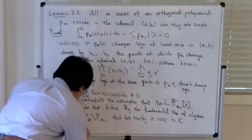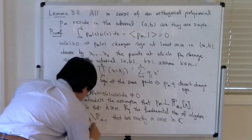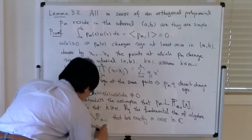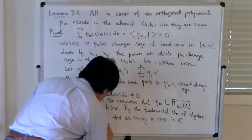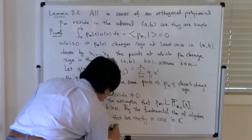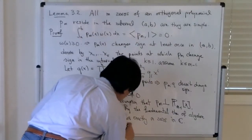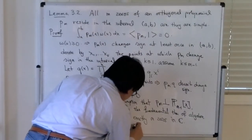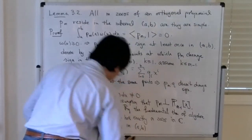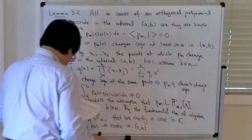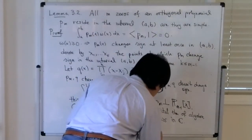This implies that p_m has m roots — all of its roots — in the interval [a, b], and that they are simple.